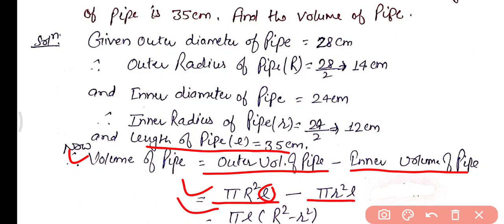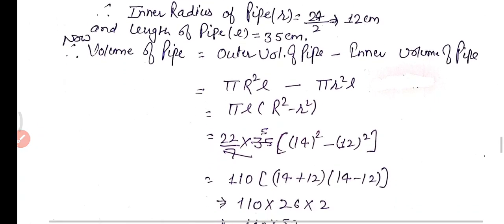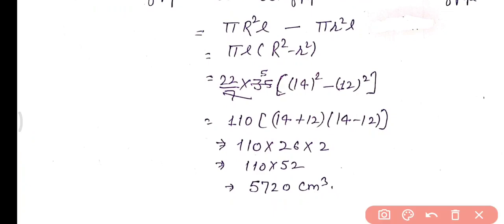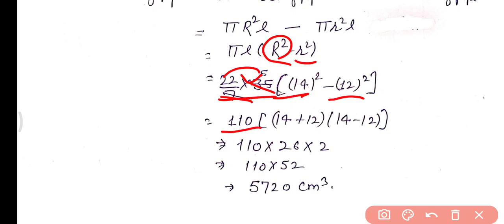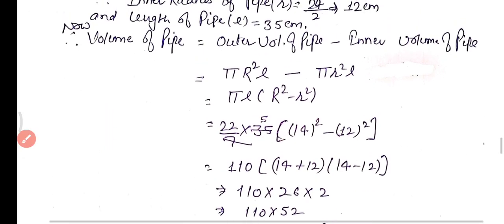Substituting values: π × l × (R² − r²) = (22/7) × 35 × (14² − 12²). Using the identity a² − b² = (a+b)(a−b), we get (14+12)(14−12) = 26 × 2 = 52. So the volume = (22/7) × 35 × 52 = 110 × 52 = 5,720 cm³. This is the volume of the pipe, and this is all about question number 2.